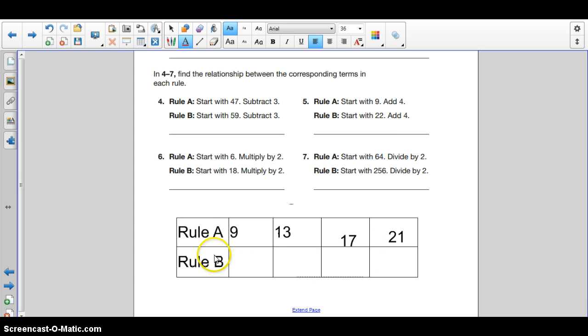All right. So rule B says start with 22, add 4. So we have 22. Add 4, which gives us 26. Add 4 to that gives us 30. And then 34.